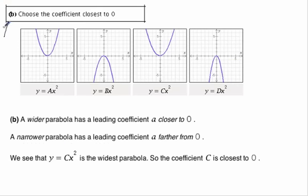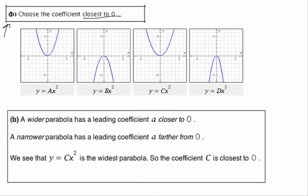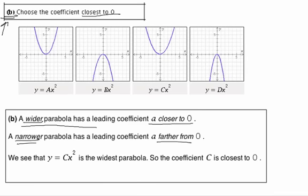Next, we look at part B. Choose the coefficient closest to zero. So once again, here are some notes, very important to understand. The wider a parabola is, then the smaller the coefficient, or the closer to zero. And a narrower parabola has a larger coefficient. So what we're looking for here is the widest parabola because we're looking for the closest to zero.